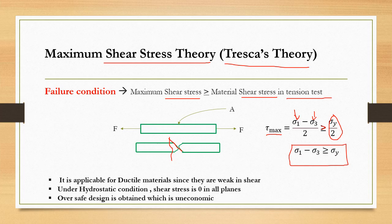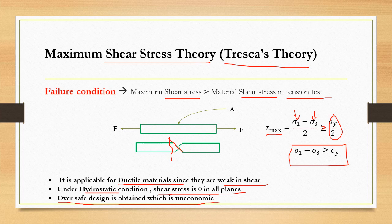It is applicable only for ductile material since they are weak in shear. Under hydrostatic conditions the shear stress is zero in all planes. This particular theory gives a design which is over-safe. Over-safe designs are uneconomic — they give a sense of safety but are not economic in nature. Companies would prefer a theory that is just safe and does not give an over-safe design.